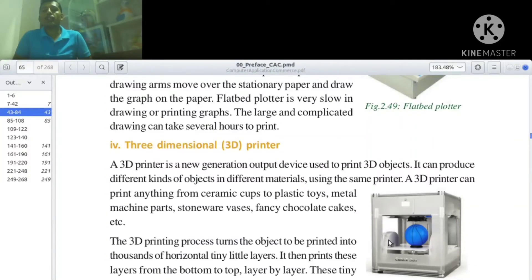The 3D printer is a new generation output device used to print 3D objects. It can produce different kinds of objects in different materials using the same printer.